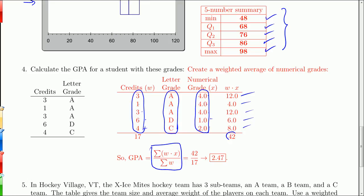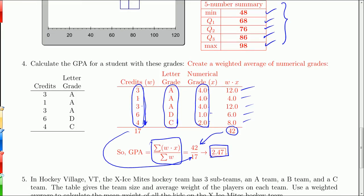You add all those up, 42. And that's the top part of the fraction. And when you add up all the weights here, 3 plus 1 plus 3 plus 6 plus 4 is 17. That went right to there. The GPA is 2.47. All right. It's just a weighted average where the weights are the credits and the scores are the numerical values of the grades.